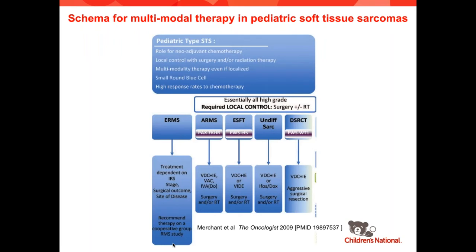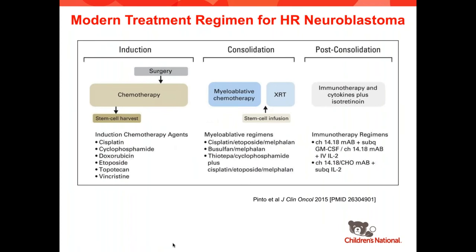Multimodal therapy is used to combat pediatric soft tissue sarcomas. Typical treatment consists of systemic multi-agent chemotherapy and, most importantly, local control — which typically consists of surgery and/or radiation therapy.